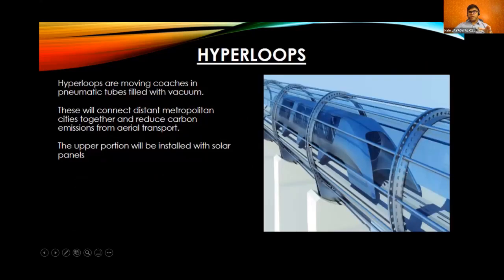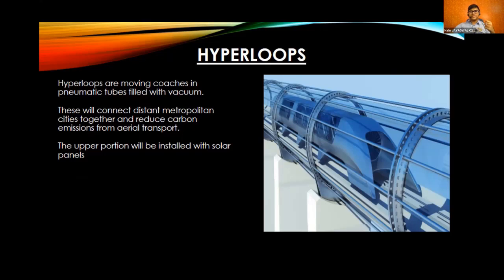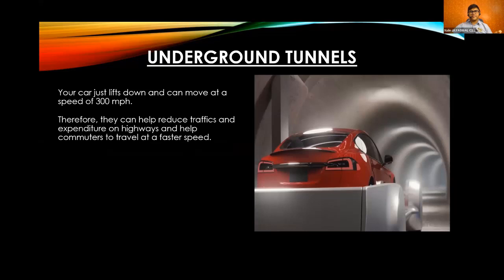We also have hyperloops, but instead of running within the city — which can be dangerous given the high speeds of maglev trains — we use them to connect distant cities to ours so people can come and do business. Additionally, we have Elon Musk's idea of underground tunnels which reduce overhead traffic and allow cars to run at very high speeds. These can be booked using the city's app.